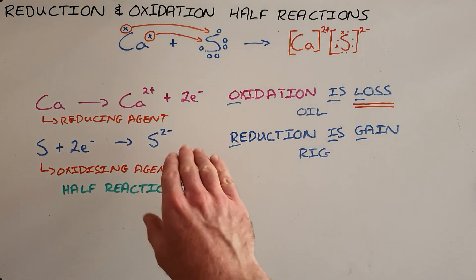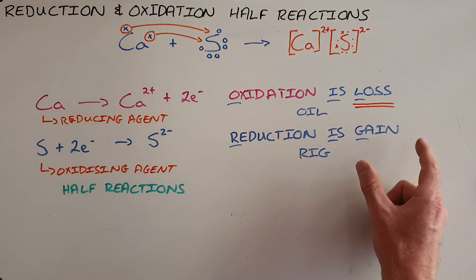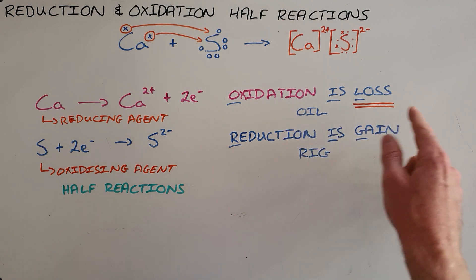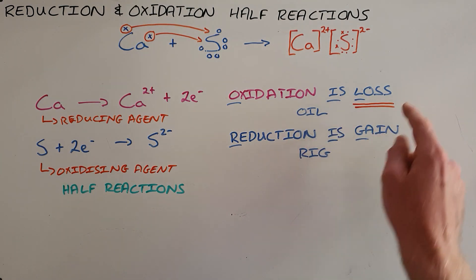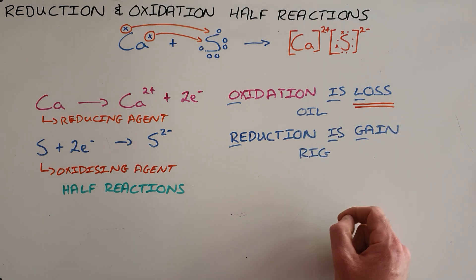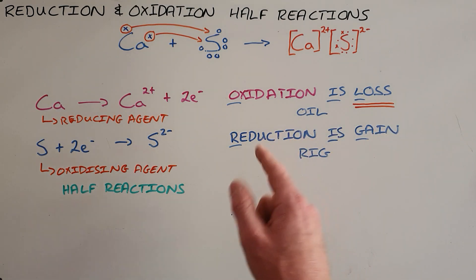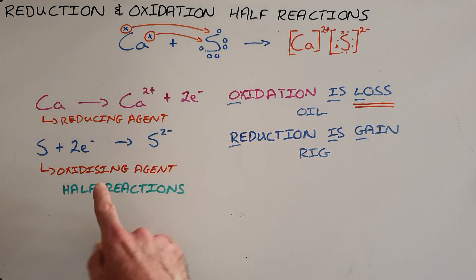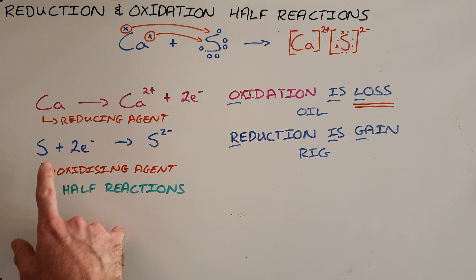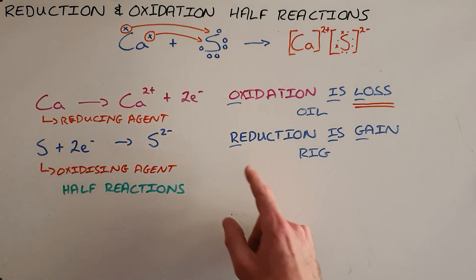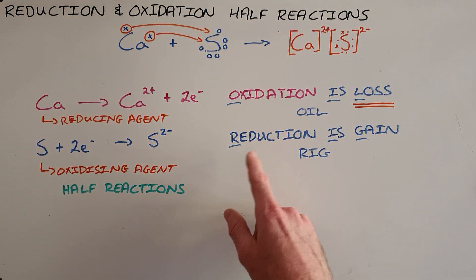Oxidation is when something loses electrons — oxidation is a loss of electrons — and reduction is when something gains electrons — reduction is gain.